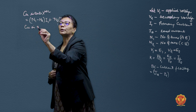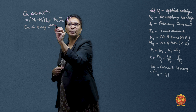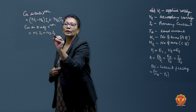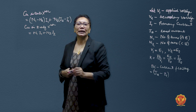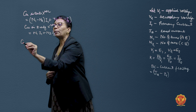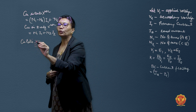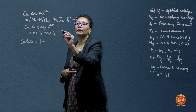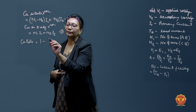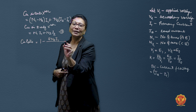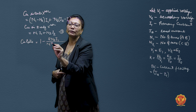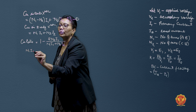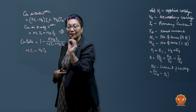In a two-winding transformer, the copper used would be N1·I1 plus N2·I2. To find the copper ratio of autotransformer compared to the two-winding transformer, we divide the first expression by the second. Dividing the autotransformer copper equation by the two-winding transformer copper equation, and applying the transformation ratio condition N1·I1 = N2·I2, we obtain: 1 minus 2·N2·I1, divided by 2·N1·I1.